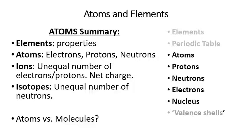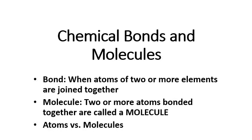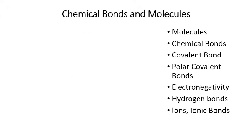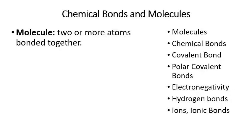So we've now learned about elements, atoms, ions, and isotopes. Chemical bonds are basically forces that hold different atoms together. Normally atoms are by themselves unless you cause a chemical reaction that binds them to other atoms through chemical bonds. A bond is when two or more atoms are joined together to make a molecule. A molecule is two or more atoms bound together — that's the difference between an atom, which is by itself, versus a molecule.